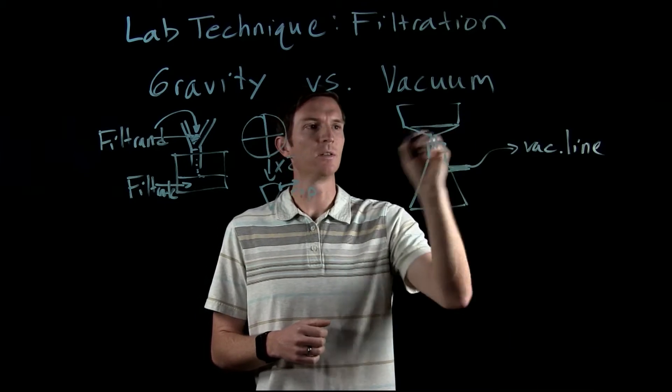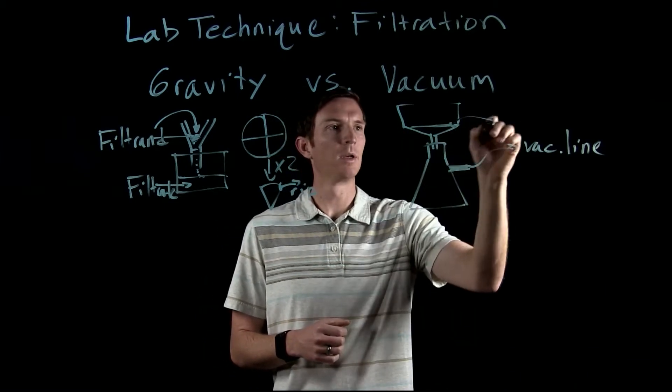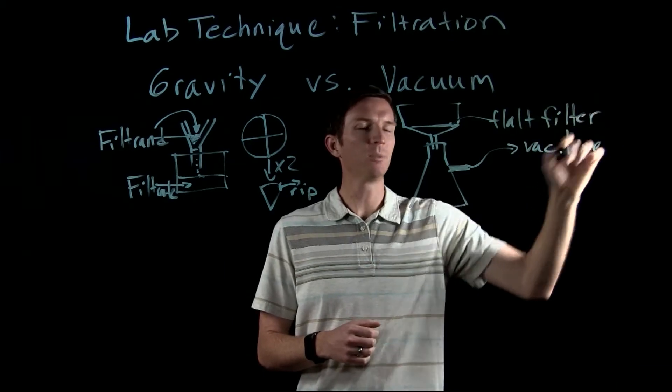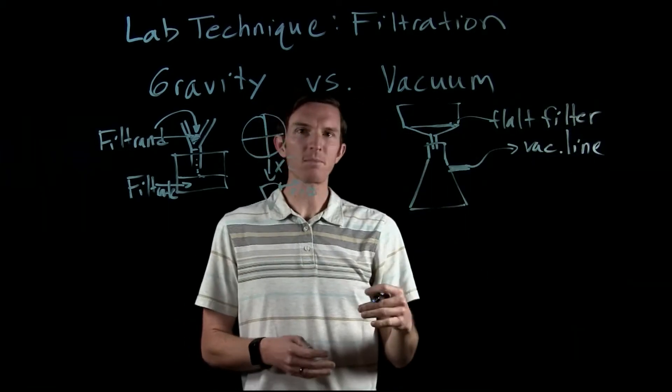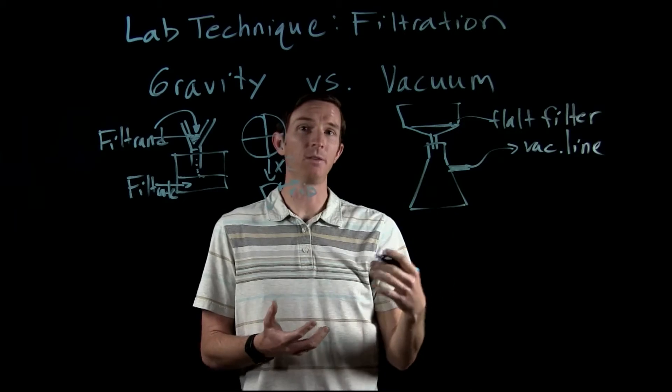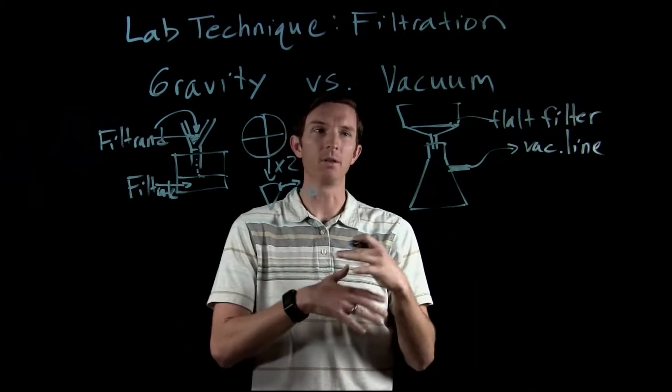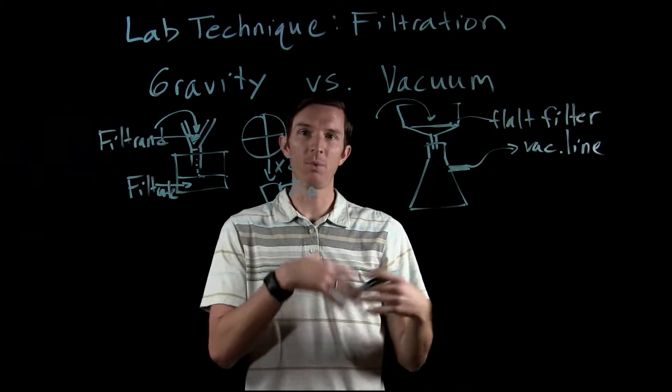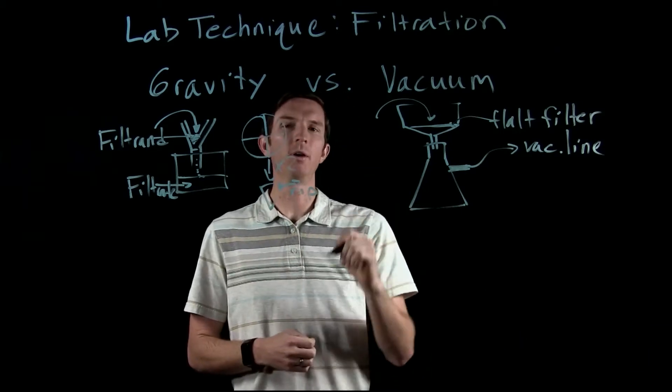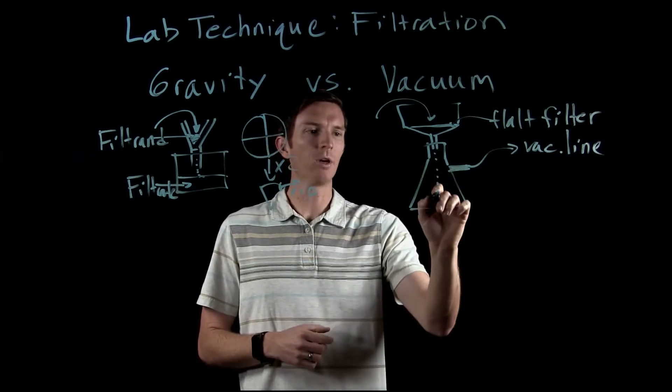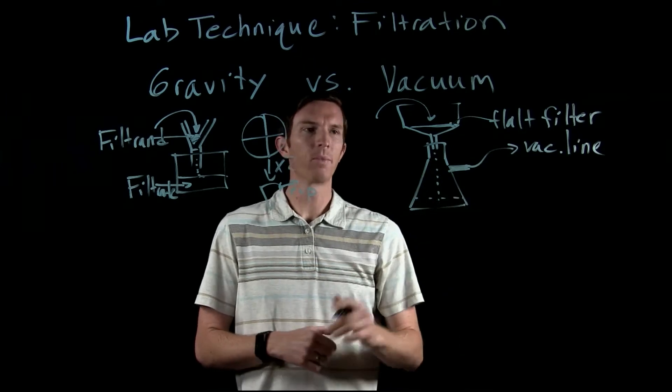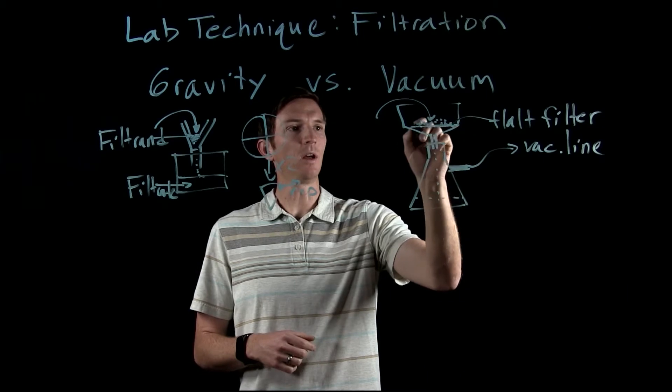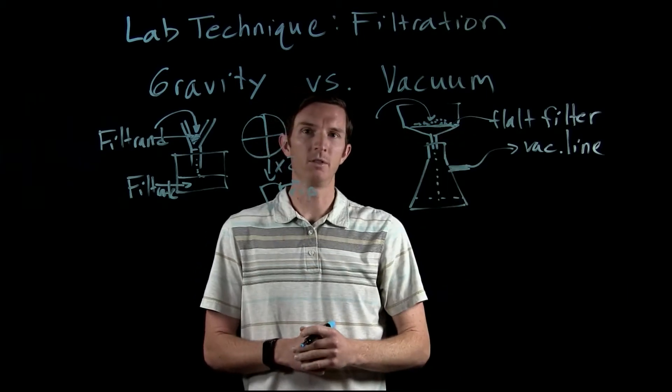Now our filter paper in this instance sits flat. So we'll have our filter paper sitting flat in there, and what this does is this allows us to kind of spread out our solid. So again, we're going to use our filter paper to separate a solid from a liquid. We'll pour our sample in there, and we'll get some of that liquid to come through. And then we'll build up this solid sitting on top of our filter paper.